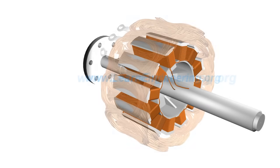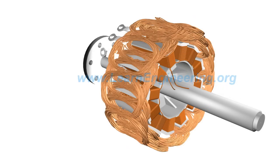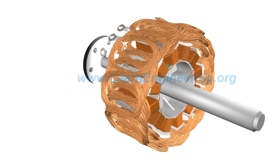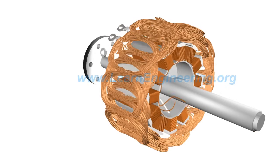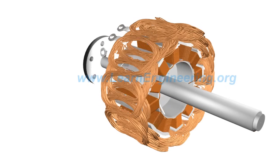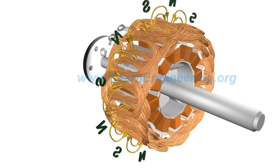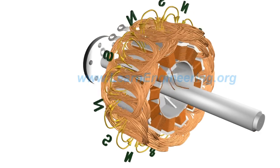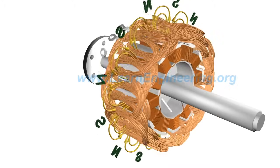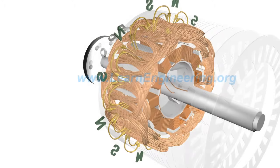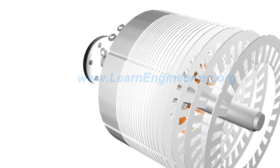Armature winding of a three-phase, 12-pole system is shown here. A stator core is used to enhance magnetic flux transfer.